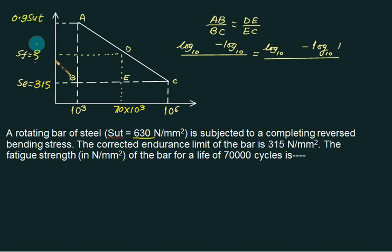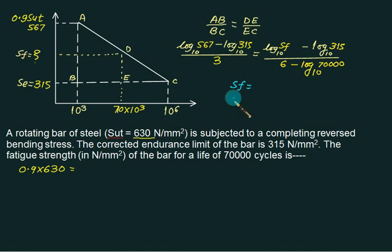You have the same similar triangle setup. The first value A is 567, value at B is 315. This is standard: 6 minus 3. At point D, we do not know this value. This value at E is same as Se, which is 315. This value is 6 minus log of 70,000 to the base 10. The only unknown left is Sf.